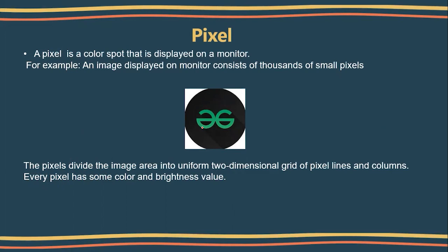Then we will see what is image resolution and what is pixel per inch. A pixel is nothing but a color spot that is displayed on a monitor. If you see anything on the monitor, that is because of the pixels only. So these pixels, or color spots, are different colored spots that are displayed on a monitor. For example, an image that is displayed on a monitor consists of thousands of small pixels.